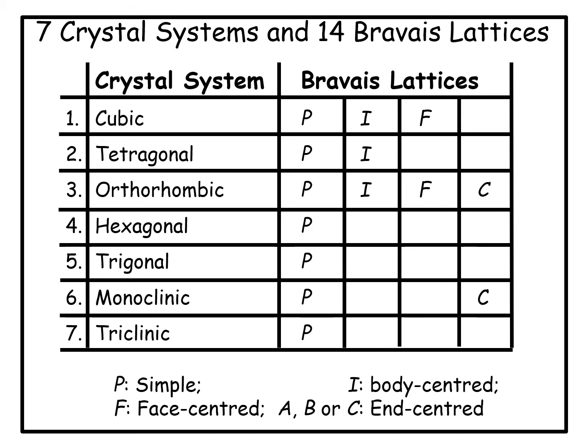Orthorhombic has, apart from P, I, and F, another variety known as end-centered orthorhombic. This can be designated as A, B, or C. We will see the meaning of these letters a little later.